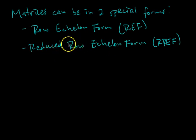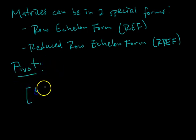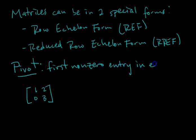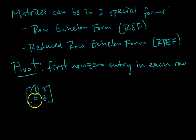Before going through the criteria of each form, I have to define a special key term, which is pivot. So what does a pivot mean? If you look at a matrix, some entries are special entries, and we call those special entries pivots. What makes them special is that they are the first non-zero entry in each row. In this example matrix, you go to the first row and the first non-zero entry going left to right is the pivot. Then in the second row, the first non-zero entry is the three. So those are your two pivots for this example matrix.